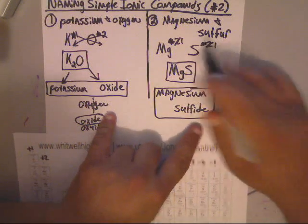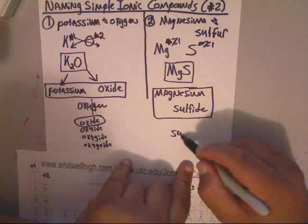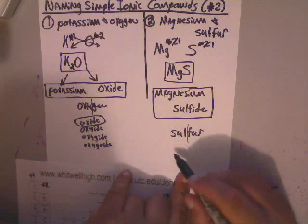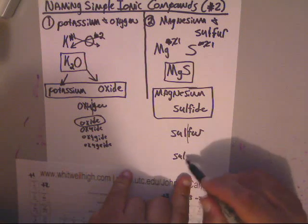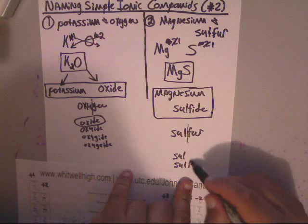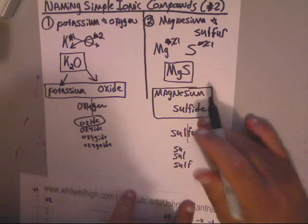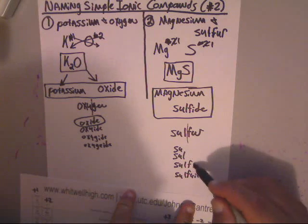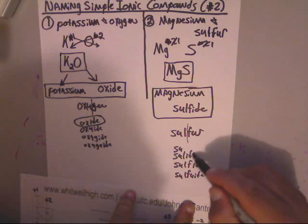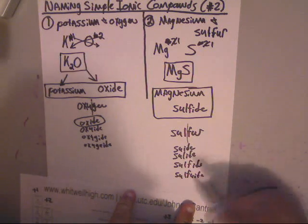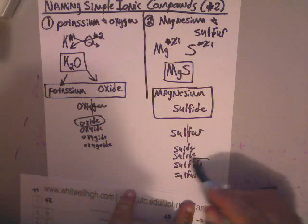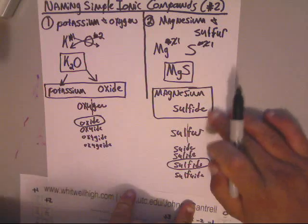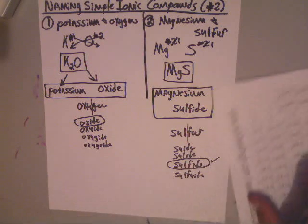Now if you need a quick refresher on how to get sulfide, you take sulfur, S-U-L-F-U-R, break it in half, and do the spelling trick that I showed y'all in class. Add I-D-E to all these. And pick the one that sounds the best. And the one that sounds the best is sulfide. That's why it's magnesium sulfide.